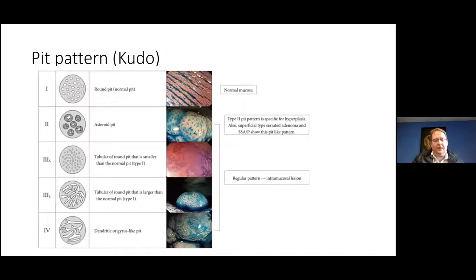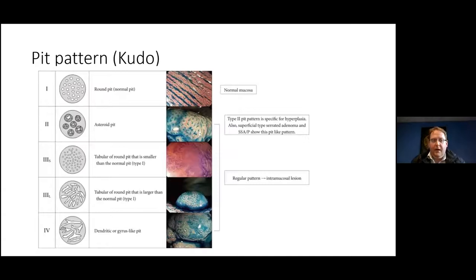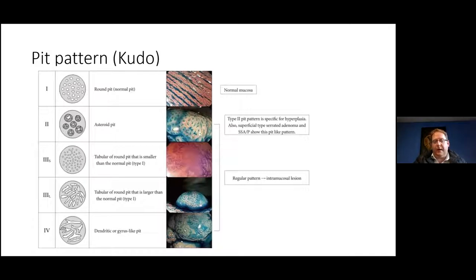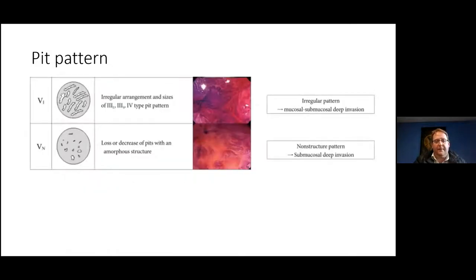First up is chromoendoscopy. During your colonoscopy, you spray the polyp — or the colon — with a dye and you have a look at the pit pattern of that polyp. Kudo put together a pit pattern classification showing the risk of the polyp, and as you go from type 1 all the way down to type 6, your pit pattern will change as your polyp becomes more malignant. Type 2 is the pit pattern for your hyperplastic and serrated polyps. Type 3s move more toward adenomas, and you're looking at type 5s when you're getting more malignant lesions.